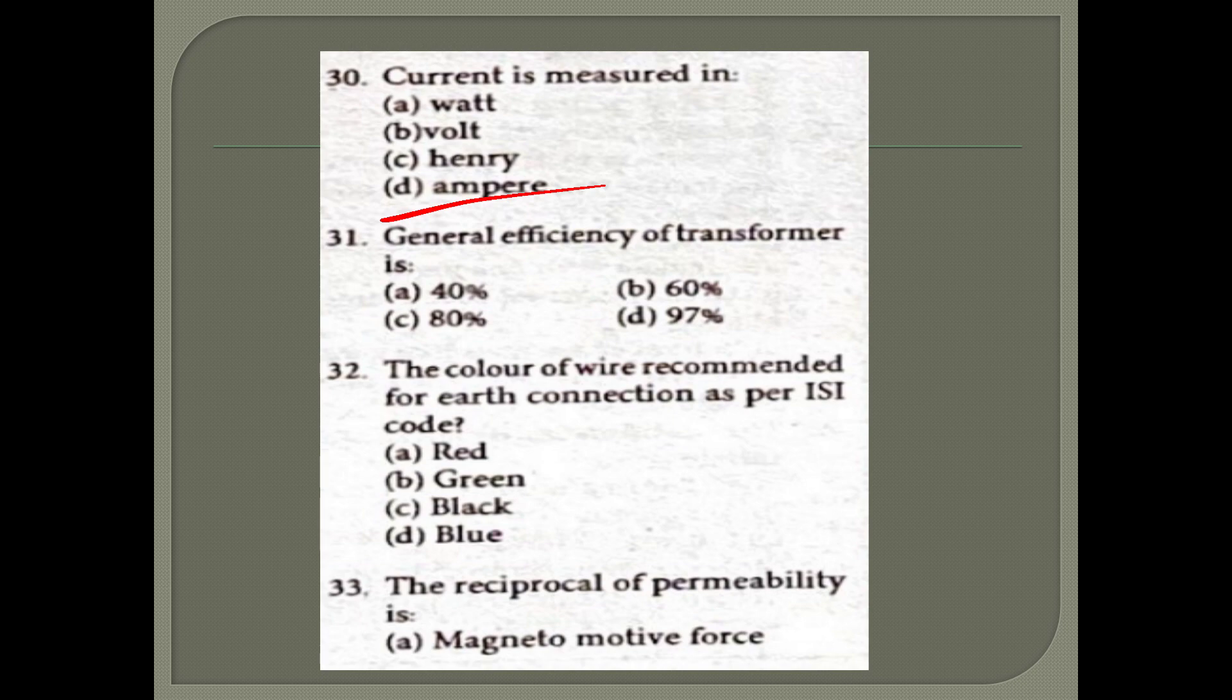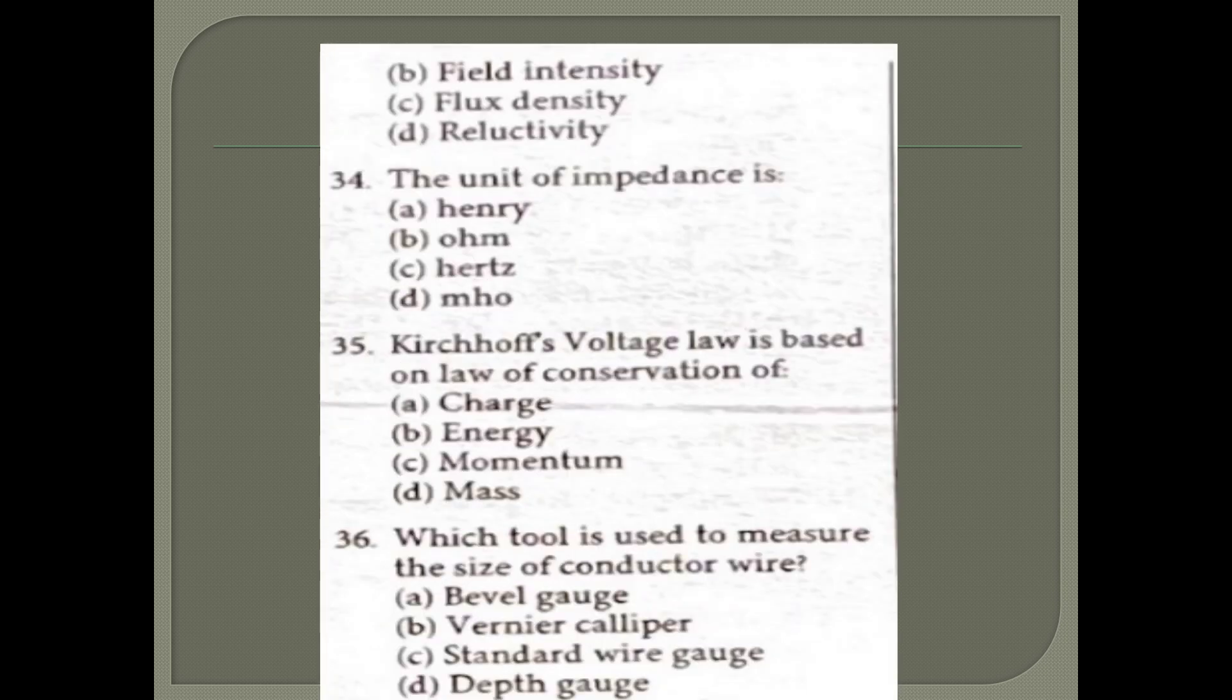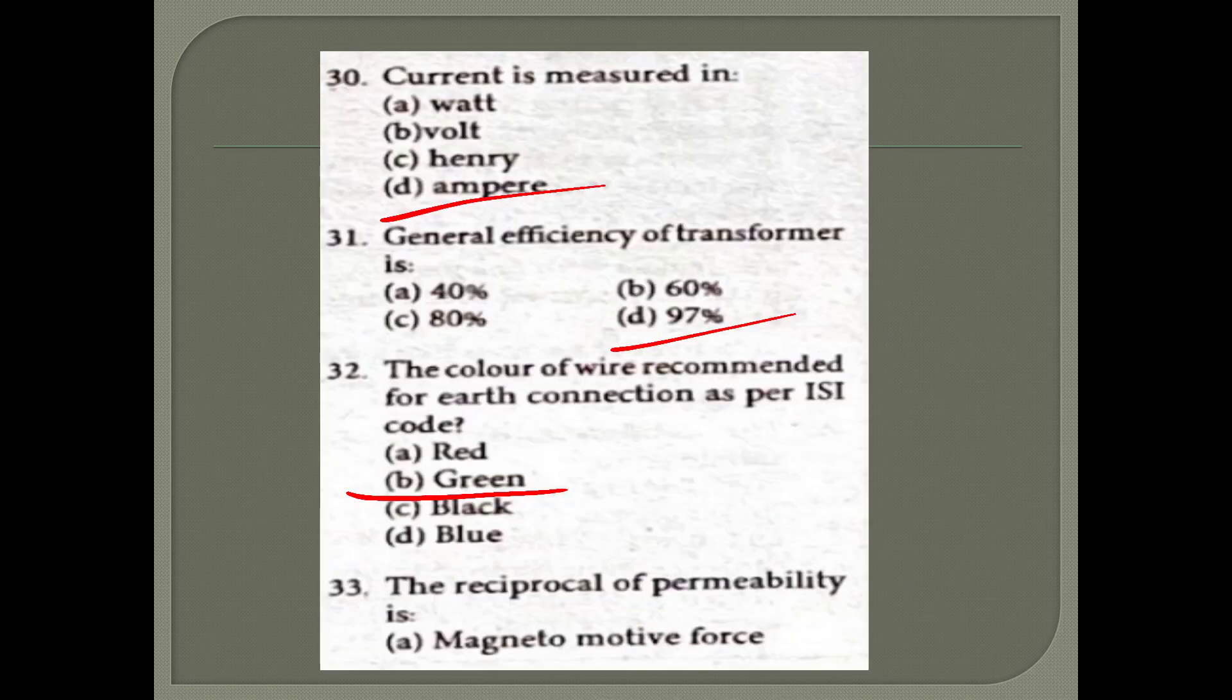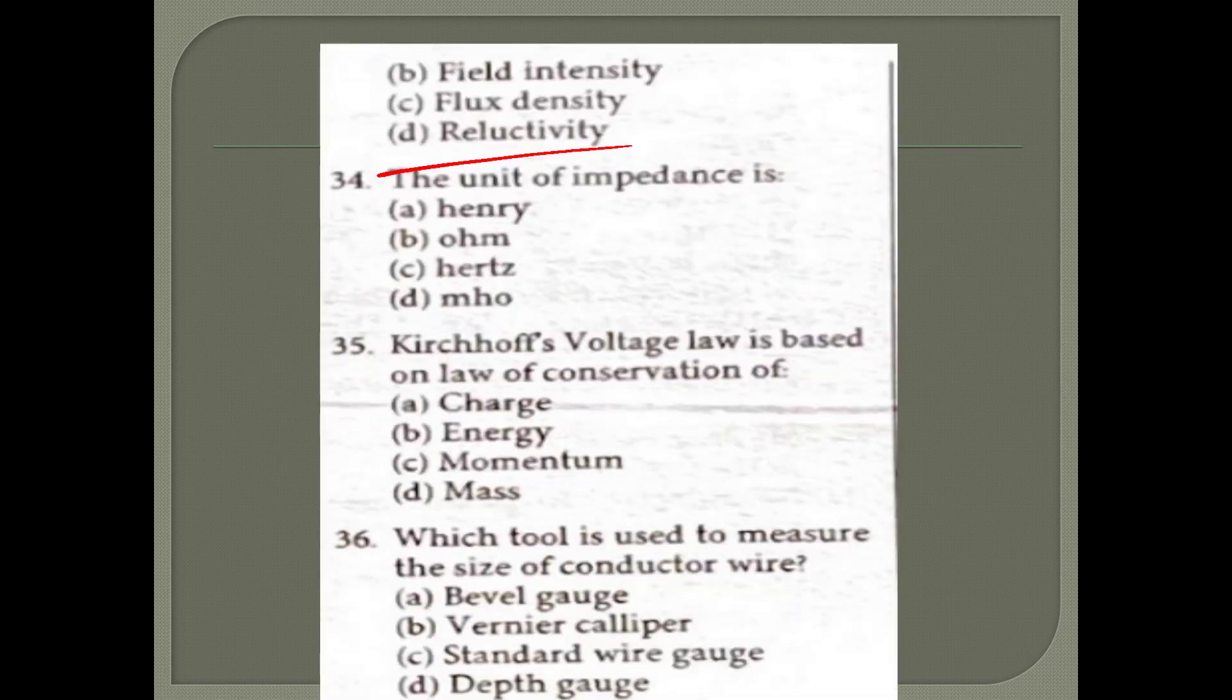General efficiency of a transformer is 97%. The color of wire recommended for earth as per ISI code is green. Reciprocal of permeability is reluctivity. The answer is option B - reluctivity.